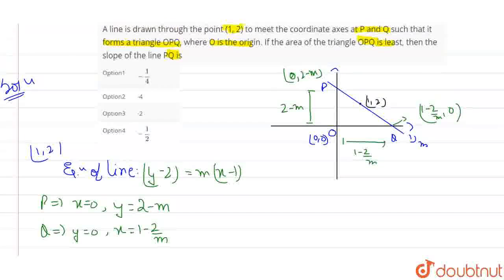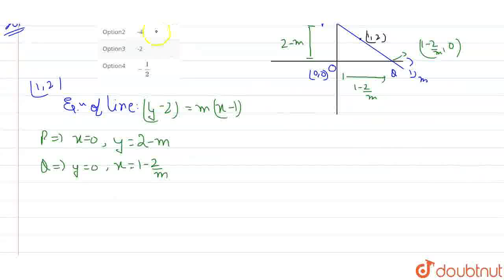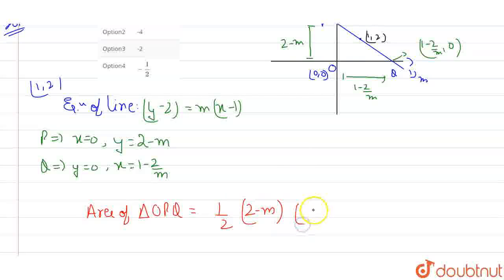So now what is given to us? The area of triangle OPQ is least. So first what I will do, I will find out the area of triangle OPQ. The formula is half into base into height. Base here is OQ, which will become 2-m, and this is 1-2/m. So this is base and this is height. So we can write it as, or if I write it in more generalized form, this will become m-2/m.